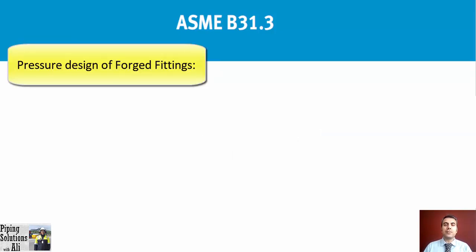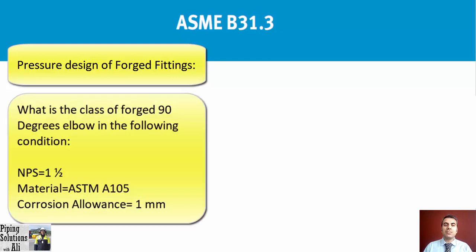First, forged fitting. Can you specify the class of a forged 90-degree elbow in the following condition: NPS equals one and a half, material ASTM A105, and corrosion allowance equals one millimeter?